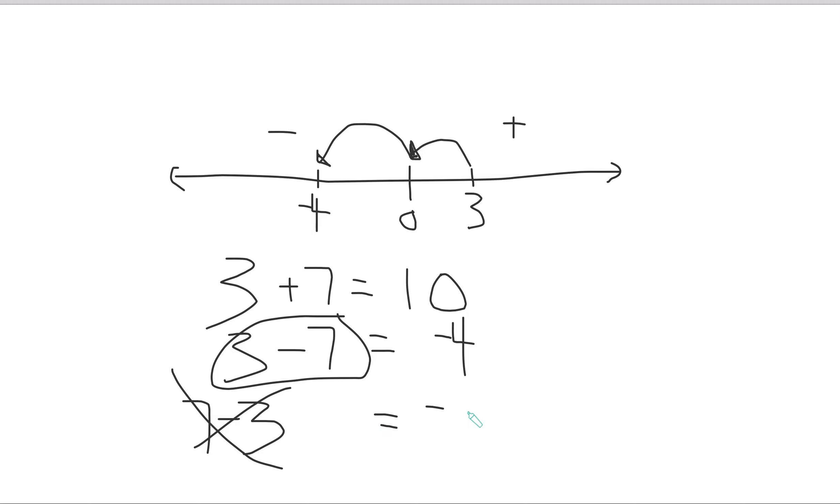Then you get 4, and you just drop it in. So you already know it's negative, and you just drop in the number. 7 - 3 is 4, so it's -4.